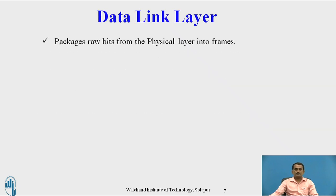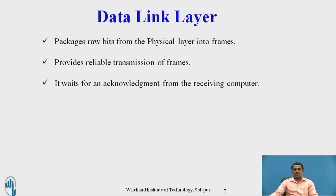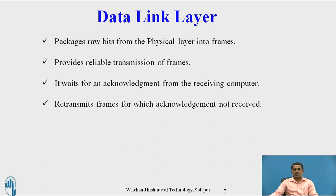Next is the data link layer. It packages raw bits from the physical layer into frames. In the data link layer, data is sent in the form of frames containing source information, destination information, and other related information. It provides reliable transmission of frames and waits for acknowledgement from the receiving computer after sending data. If the timeout is reached and no acknowledgement is received, it retransmits the frames.